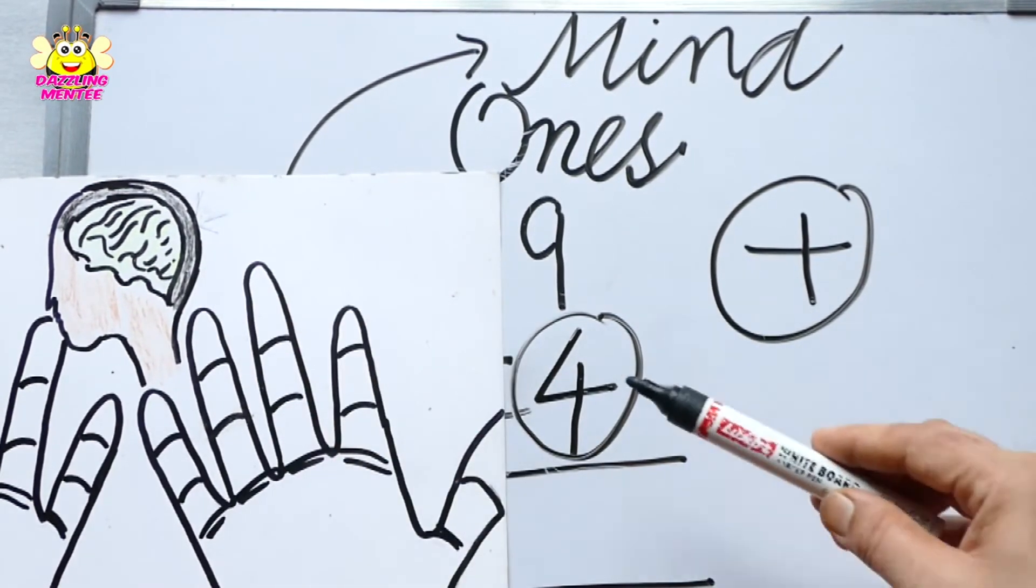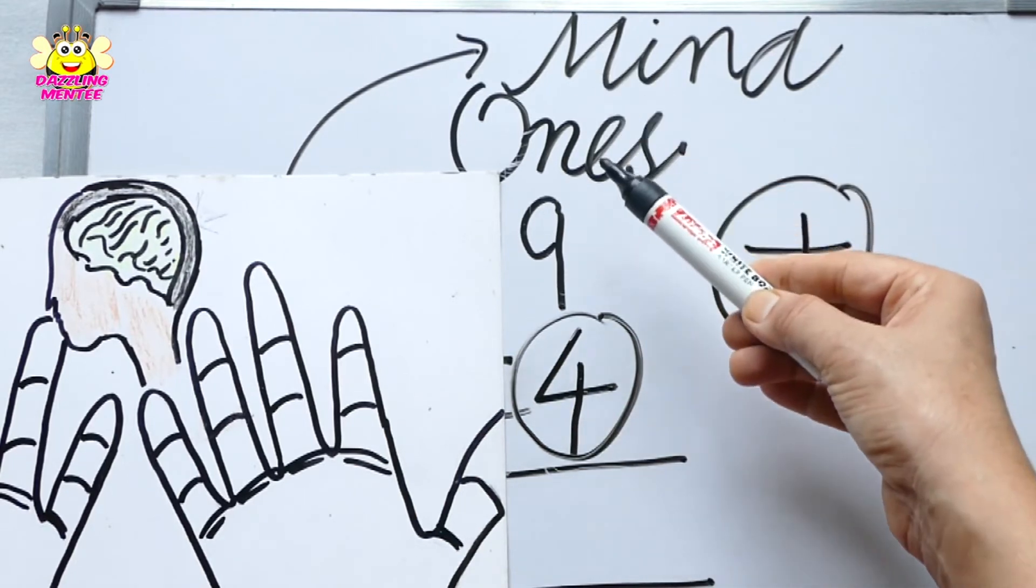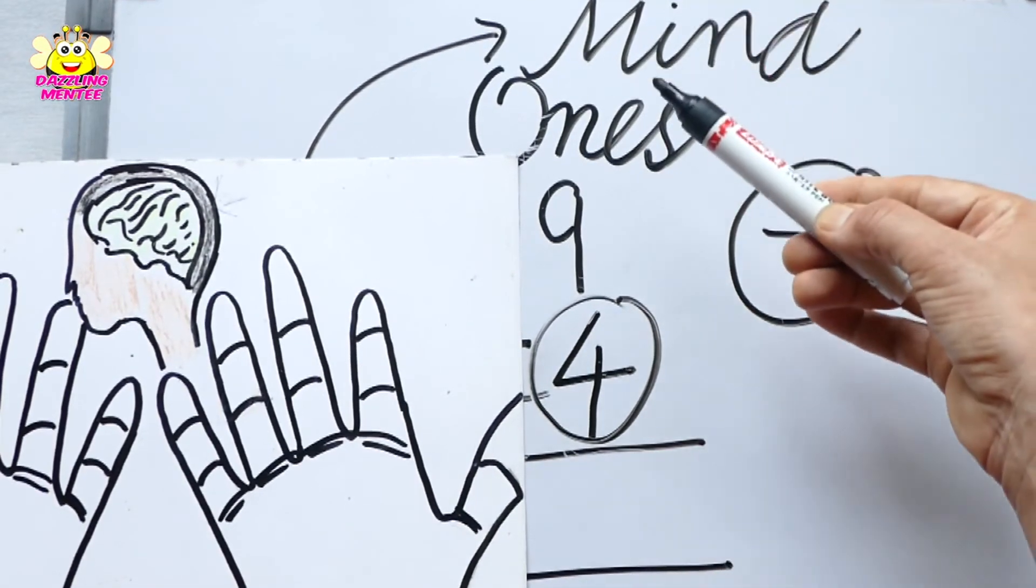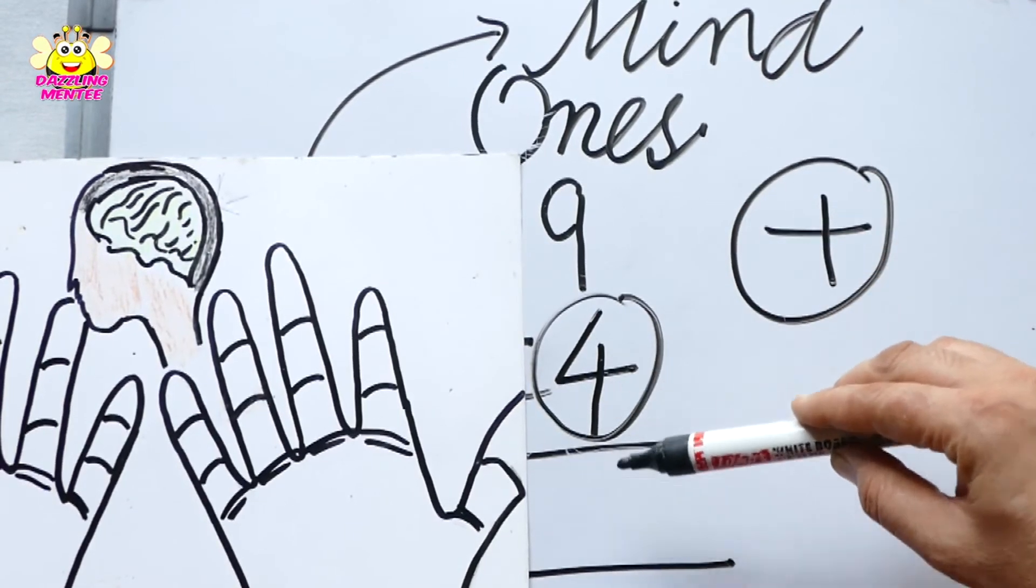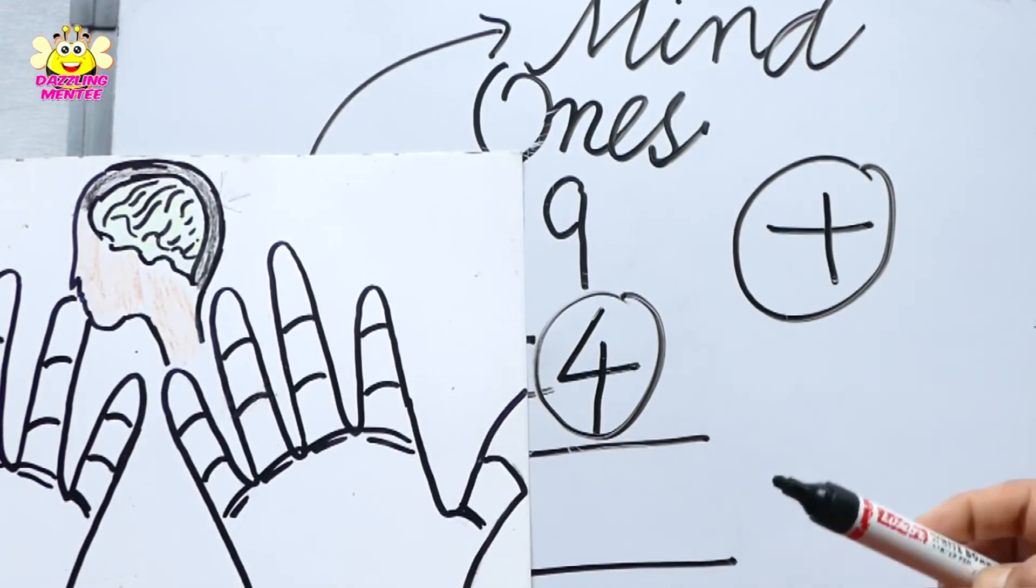Now what will we do? We will start counting after 4. After the bottom number, we will start counting.